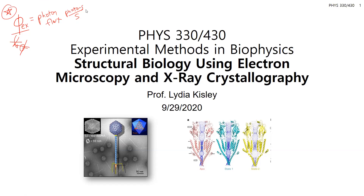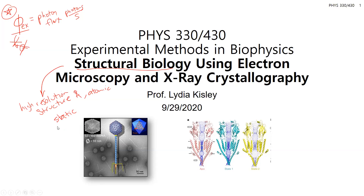Getting into today's topic, we're going to start exploring the field of structural biology and looking at things at high resolution — down to the angstrom level or atomic level resolutions. The drawback is that it's a static method. We've been talking about optical techniques for several weeks, and now we're moving to x-rays, which are still electromagnetic radiation, and also electrons and other types of matter to look at biophysics.